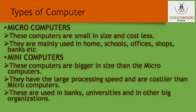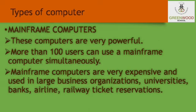These computers are given different names according to their usage. Second, mini computers: these computers are bigger in size than microcomputers. They have larger processing speed and are costlier than microcomputers. They are used in banks, universities, and other big organizations. Mainframe computers are very powerful — big in size with large memory and high speed. More than 100 users can use a mainframe computer simultaneously. Mainframe computers are very expensive and are used in large business organizations, universities, banks, airlines, and railway ticket reservation, etc.